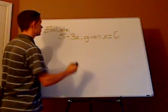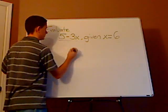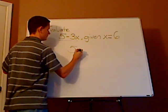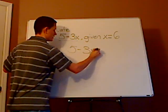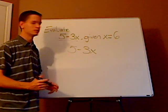What you want to do first is you always want to rewrite the problem. So you have the expression. You have 5 minus 3x. Now, it's just a matter of substitution.